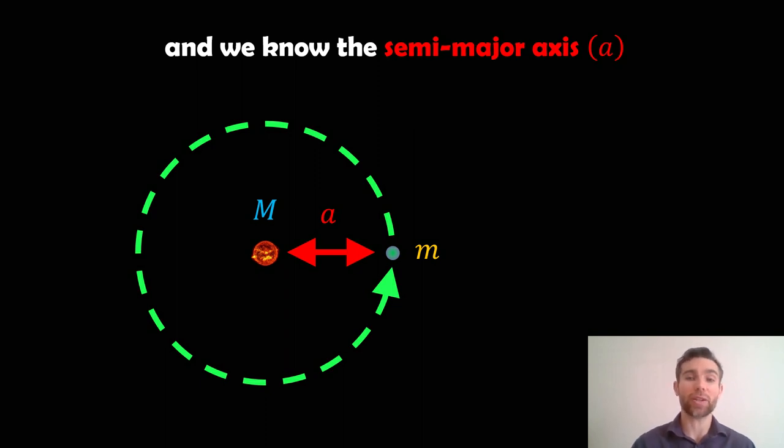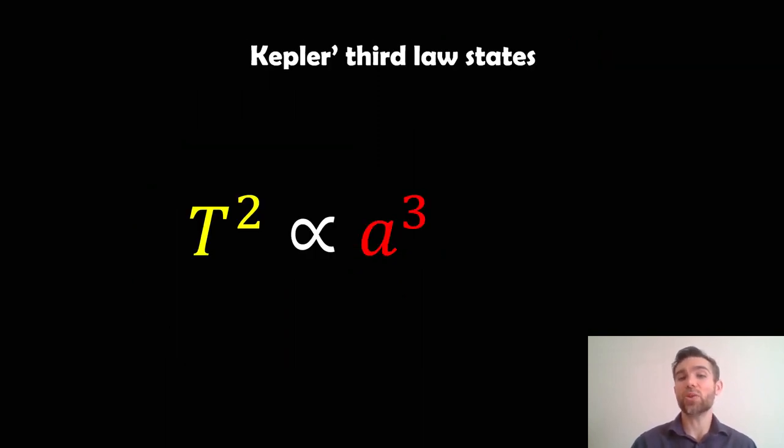So if we know all that information, we can then use Kepler's third law. Kepler's third law states that the orbital period T, the square of that, is proportional to the semi-major axis cubed, which is a.